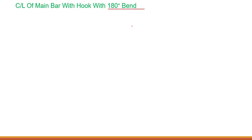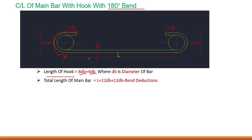Now let's find out the cut length of main bar with a hook, or 180-degree bend. You can see over here we have this bar. The length of hook, right from this position up till here, is 8db plus 4db, where db is the diameter of the bar. So 8 plus 4 makes 12db. This is the formula for the cutting length of the main bar.